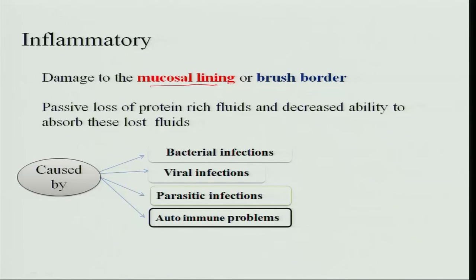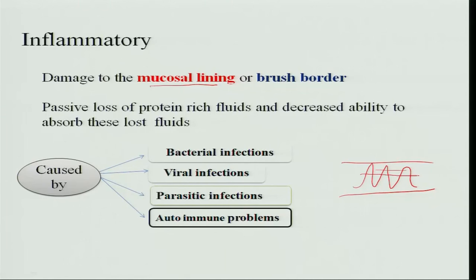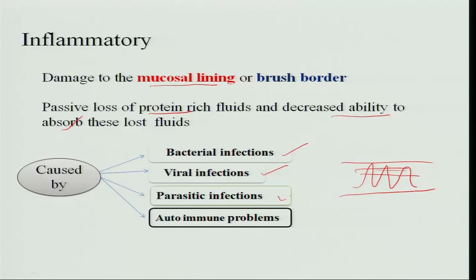Inflammatory diarrhea involves damage to the mucosal lining or the brush border — the villi in the intestines. When this brush border is disturbed, the mucosal lining is inflamed. There is passive loss of protein-rich fluids and a decreased ability to absorb them. It is caused by bacterial infection, viral infection, parasitic infection, and some autoimmune problems.